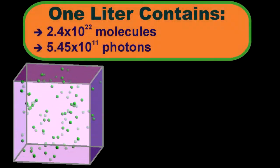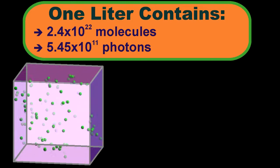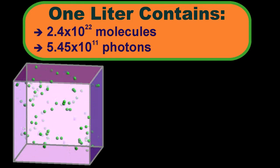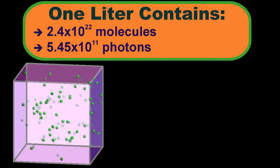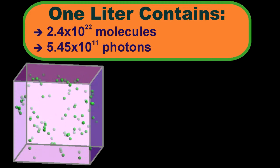So you see, at room temperature and in Earth's atmosphere, one liter contains about 10 trillion times more air molecules than photons. The light as particles heuristic is possibly useful.